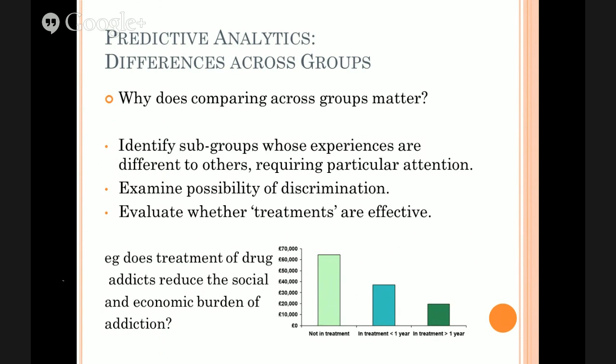In this particular example here, we've got the control group, and we've looked at the treatment group in two categories - those less than a year and those greater than a year. This represents the economic burden of addiction amongst the control group, which is much higher than for the treatment groups. So this tells us this particular treatment is actually reducing the burden on society of drug addiction. It's saving us this much money in the first year and then this much money after a year. This is all achievable by looking at the mean for one group and the mean for another group.